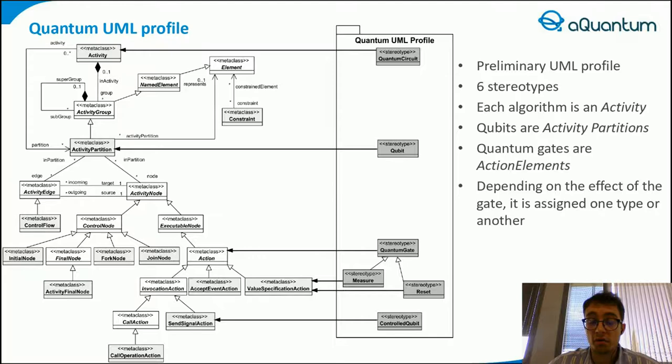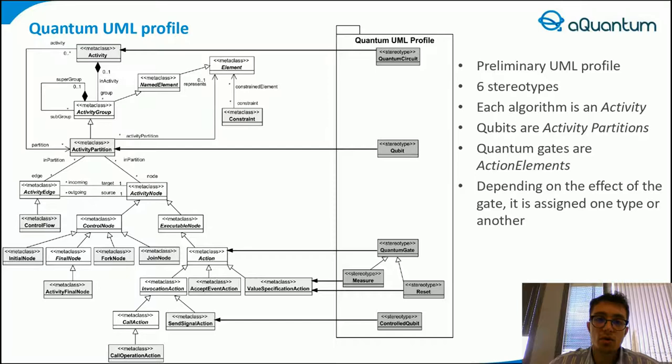All the different quantum gates applied in the circuits are, therefore, represented as action elements and are placed in their respective swim lane, according to the qubit under which the gate is applied or controlled. On the one hand, ordinary quantum gates such as Hadamard or Pauli are represented as call operation action plus the quantum gate stereotype. On the other, conditional gates are represented with multiple action elements. The controlled qubits are represented with send signal action elements with the stereotype control qubit, while the gate applied is represented with an accept event action plus the quantum gate stereotype. Additionally, in order to add the semantics concerning the relationship between the control qubits, various constraint elements are established between the action elements involved.